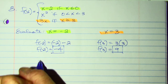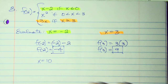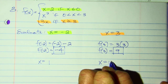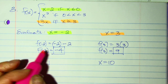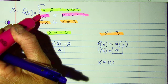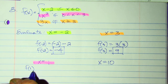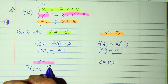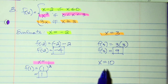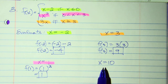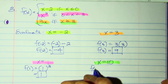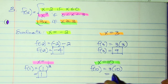Let's evaluate when X equals 1 and when X equals 10. When X equals 1, that's not less than 0, not greater than 3 — it's between 0 and 3, so I use X squared. F of 1 equals 1 squared, which equals 1. For X equals 10, that's definitely greater than 3, so I use 3X. F of 10 equals 3 times 10, which equals 30.